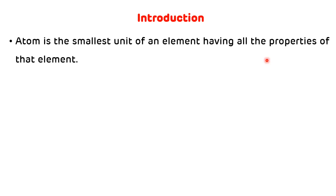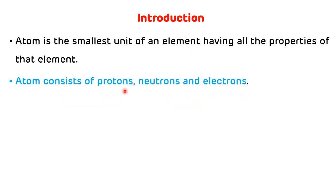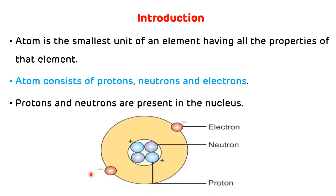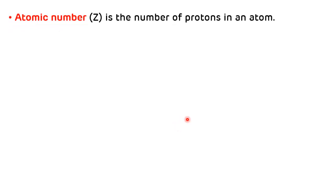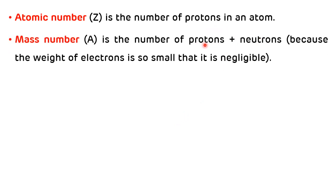Atom is the smallest unit of an element having all the properties of that particular element. An atom consists of protons, neutrons and electrons. Protons and neutrons are present in the nucleus while electrons are present on the outer orbit. Atomic number is the number of protons in an atom, and mass number is the number of protons plus neutrons, because the weight of an electron is negligible.